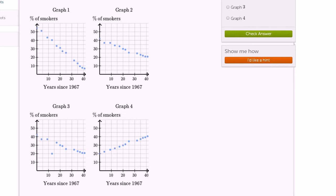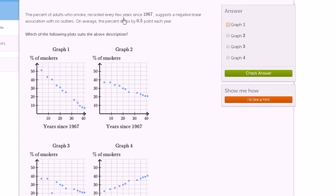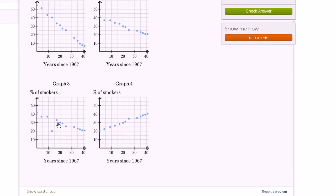Now, the other thing that they told us is that there are no outliers. Suggests a negative linear association with no outliers. If you were to try to fit a line to graph three, you could fit a line pretty reasonably that would go someplace like that, but it would have this outlier right over here. It looks like it's 12 or 13 years, about 13 years after 1967, so that would be 1980. It looks like an outlier there, but they said it doesn't have any outliers, so we would rule out graph number three.